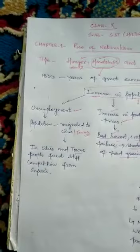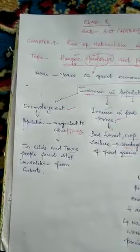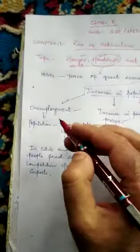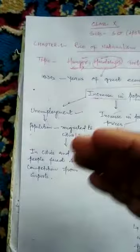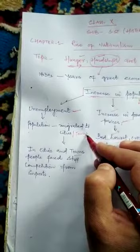Since job opportunities were fewer in villages compared to cities and towns, in search of jobs the people began to migrate to the cities and towns. This huge population that had become unemployed began to migrate to cities and towns in search of jobs.